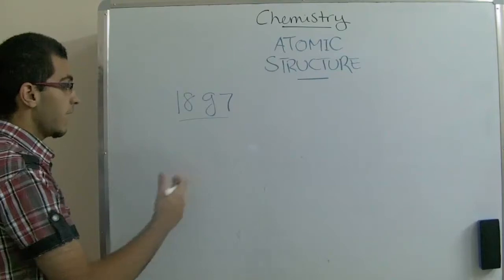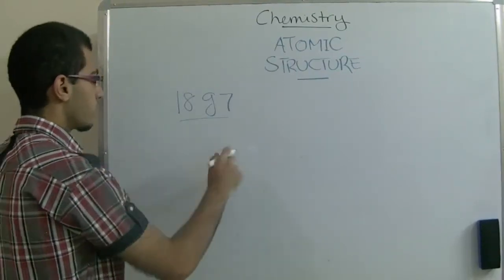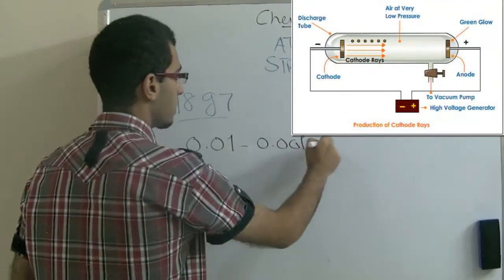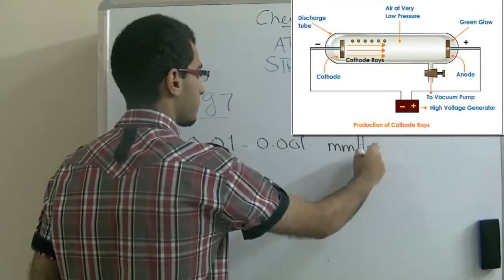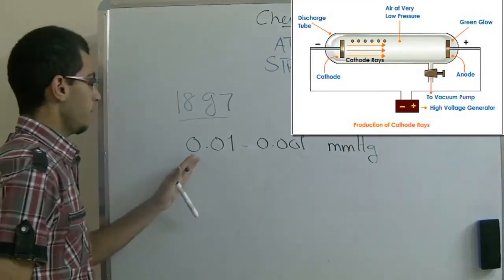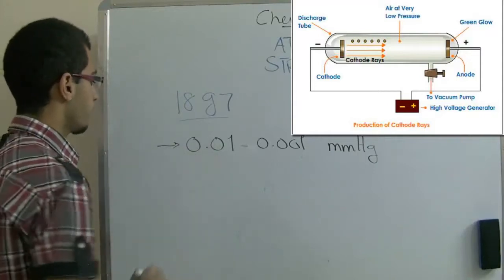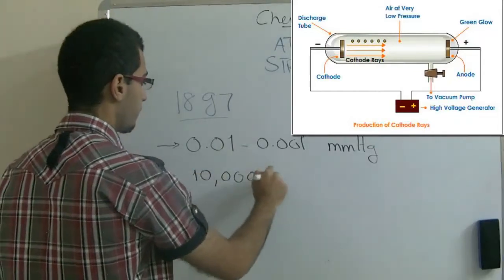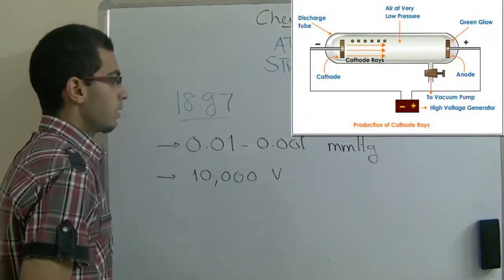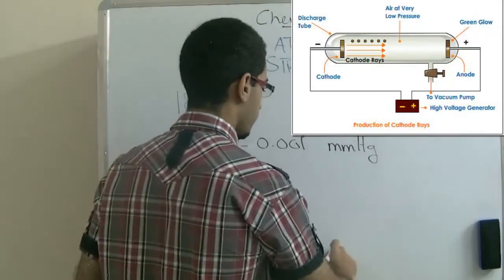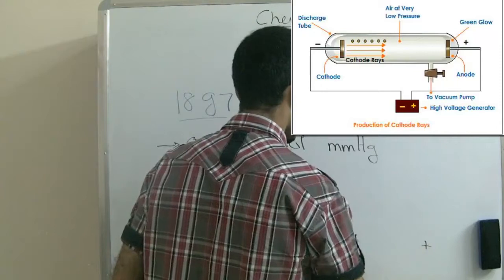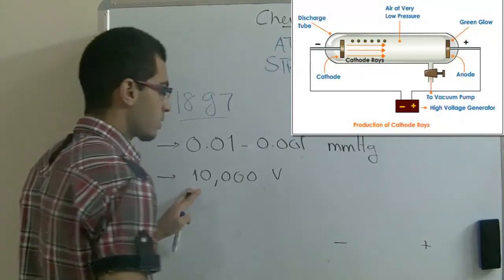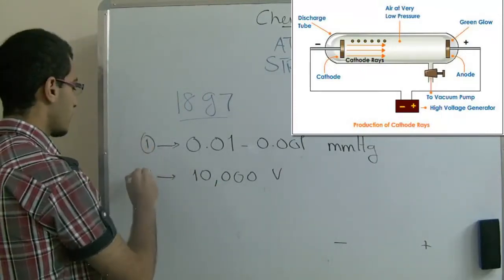They knew that gases cannot do that under normal pressure, but gases can carry electric charges under very low pressure ranging from 0.01 to 0.001 mmHg. They put the gases under this pressure and supplied them with a very high voltage, 10,000 volts, between the poles of a battery.